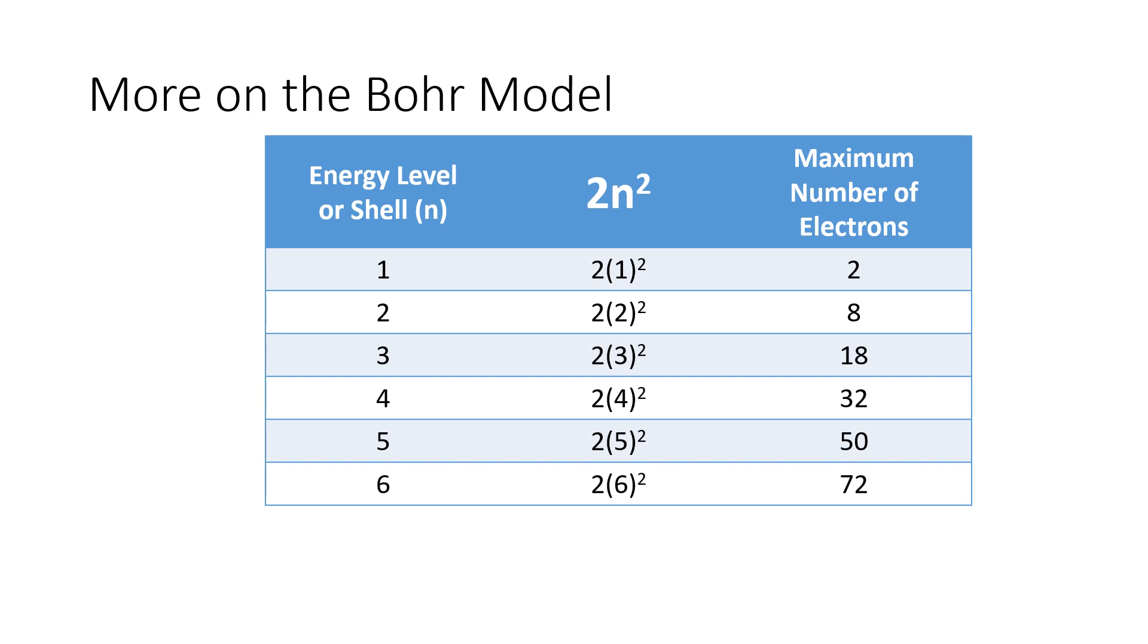And somebody who likes playing with numbers, notice this pattern. If we took the shell number and we squared it and then we multiplied that by two, that told us how many electrons could go into that shell. And so that process of squaring the shell number and then multiplying by two is summarized here as 2n squared, where n is the shell number.